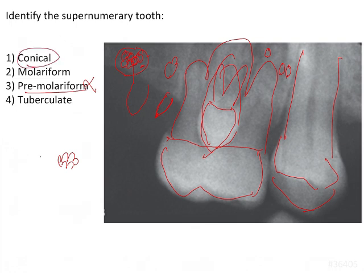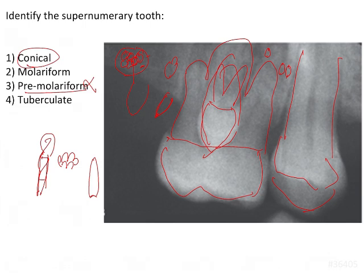When it comes to conical, conical is basically what you see in mesiodens — mesiodens is very typically termed as conical. How the tooth looks is: this is the root, this is the cervical CEJ, and the tooth looks like a cone. That is what is conical, and usually this is the mesiodens.